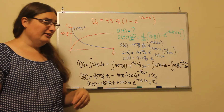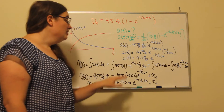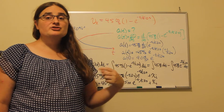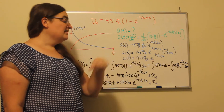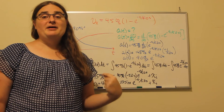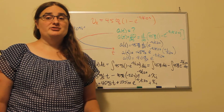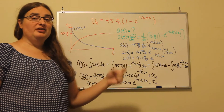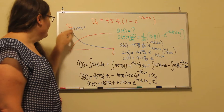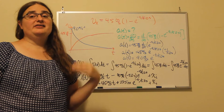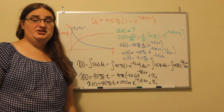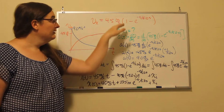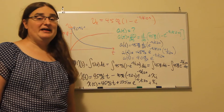Our acceleration as a function of time is equal to 9.0 meters per second squared times e to the negative t divided by 5.0 seconds. So if we have an asymptotically leveling off velocity, we have an exponentially decaying acceleration as we reach that terminal velocity predicted by this equation.